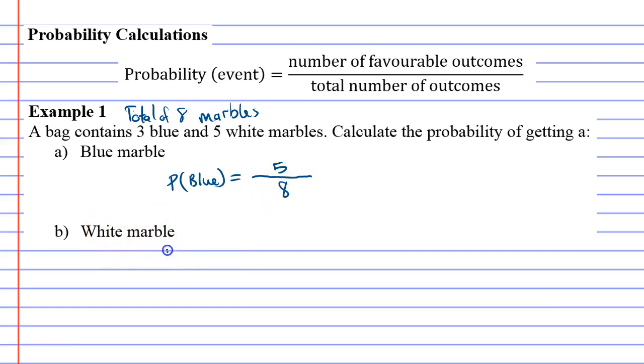So question B we're calculating the probability of getting a white marble. Without really thinking of the formula, at the top we're just putting how many white marbles there are. There's five and down the bottom we're putting the marbles in total is eight marbles all together.